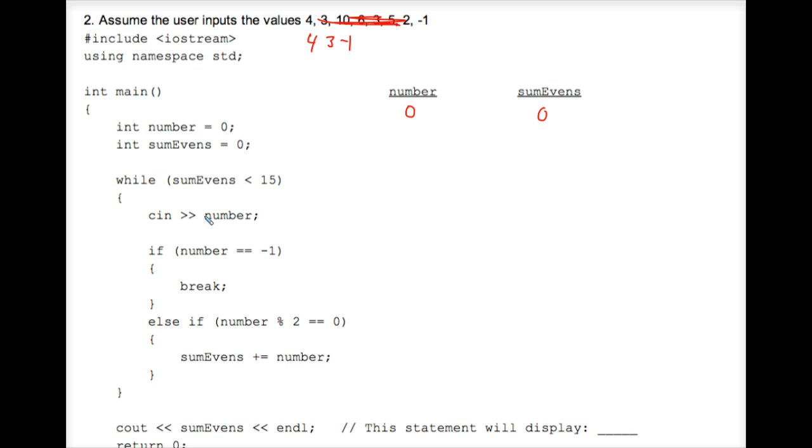The cin number tells us to put a 4 in there for number, so cross out that 0. We hit the if statement, if number equals negative 1. 4 is not equal to negative 1. So this is false, which means we don't do this. And let's look at the else if. Is this true or not? Is 4 remainder 2 equal to 0? When 4 is divided by 2, the remainder is 0, so this is true. So we do execute this assignment statement. We take number, which is currently 4, and we add it into sumEvens. So that sumEvens is now 4.